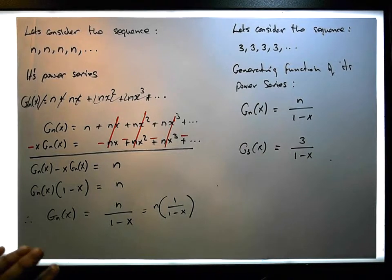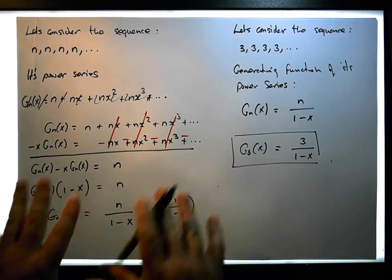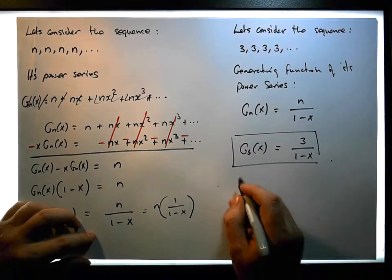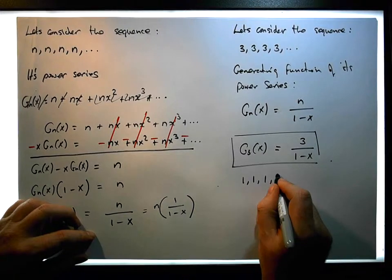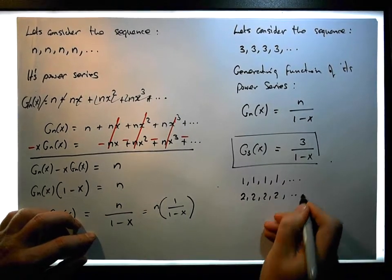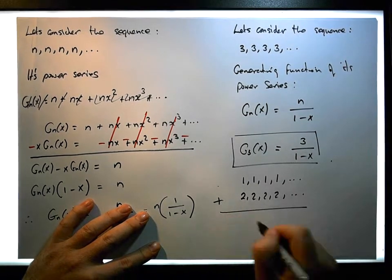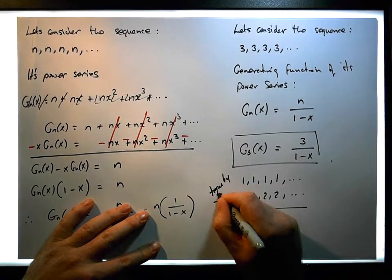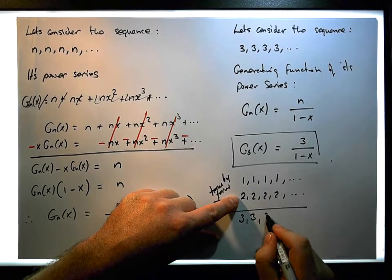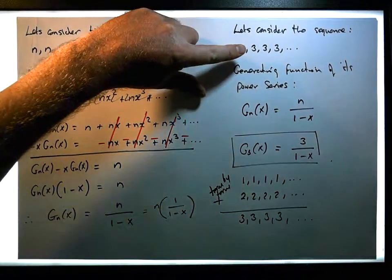Without having to use that general formula, we could look at the two previous sequences: 1, 1, 1, 1, and so on, and 2, 2, 2, 2, and so on. What we can probably see is that if we add these term by term — 2 plus 1 gives 3, 2 plus 1 gives 3, 2 plus 1 gives 3 — we end up with this particular sequence.